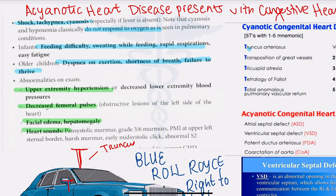In infants, congestive heart disease presents with difficulty feeding. Feeding is one of the most metabolically demanding activities for babies, so they develop a faster breathing rate, rapid respiration, and easy fatigue especially upon feeding. In older children, you see signs of congestive heart disease such as dyspnea on exertion, shortness of breath, and failure to thrive.